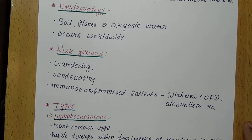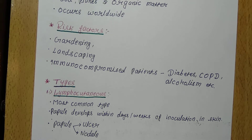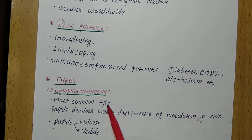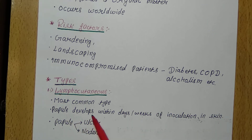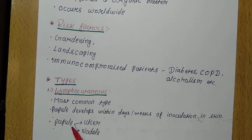Now the types of Sporotrichosis — it is subdivided into five categories. The first is lymphocutaneous, which is the most common type. In lymphocutaneous Sporotrichosis, papules develop within days or weeks at the site of skin inoculation. These papules can take two forms: ulcer or nodule.